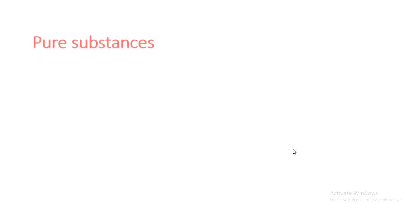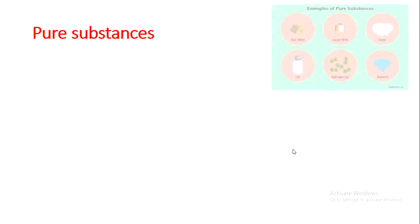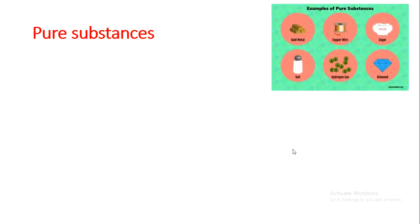So let's start with pure substances. What are pure substances? I have here a figure that shows some examples of pure substances, like gold metal — gold is a pure substance. Copper wire is a pure substance. Sugar is a pure substance because it is made of only one thing, which is sugar. Salt is a pure substance. Hydrogen gas and diamond also are pure substances.